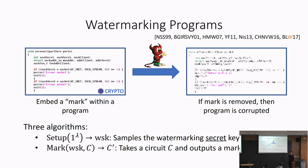Then there's a marking algorithm that takes in the watermarking key and the description of a program. In this work, we model programs as Boolean circuits. The marking algorithm takes in a key and a description of a Boolean circuit, and outputs a new circuit C prime that should be considered marked in a precise manner.